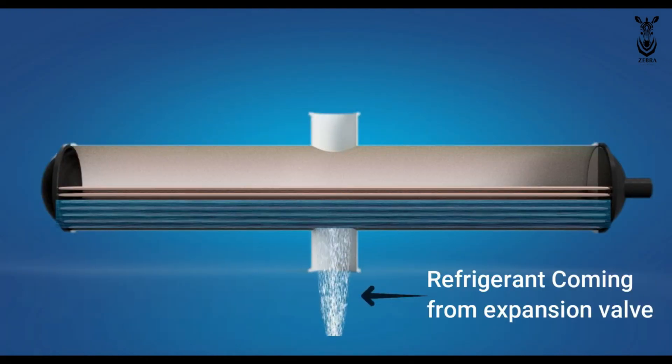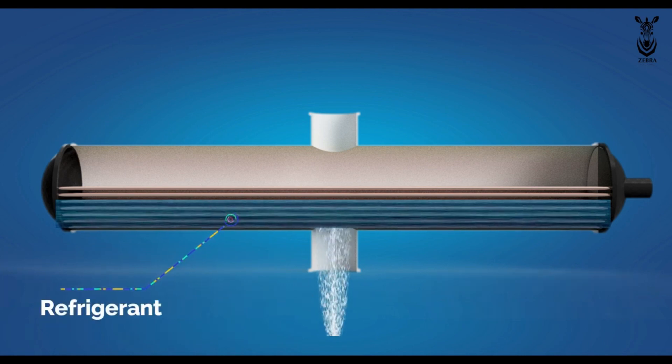The refrigerant from the expansion valve fills the evaporator through the inlet. This refrigerant surrounds the coils inside the evaporator.